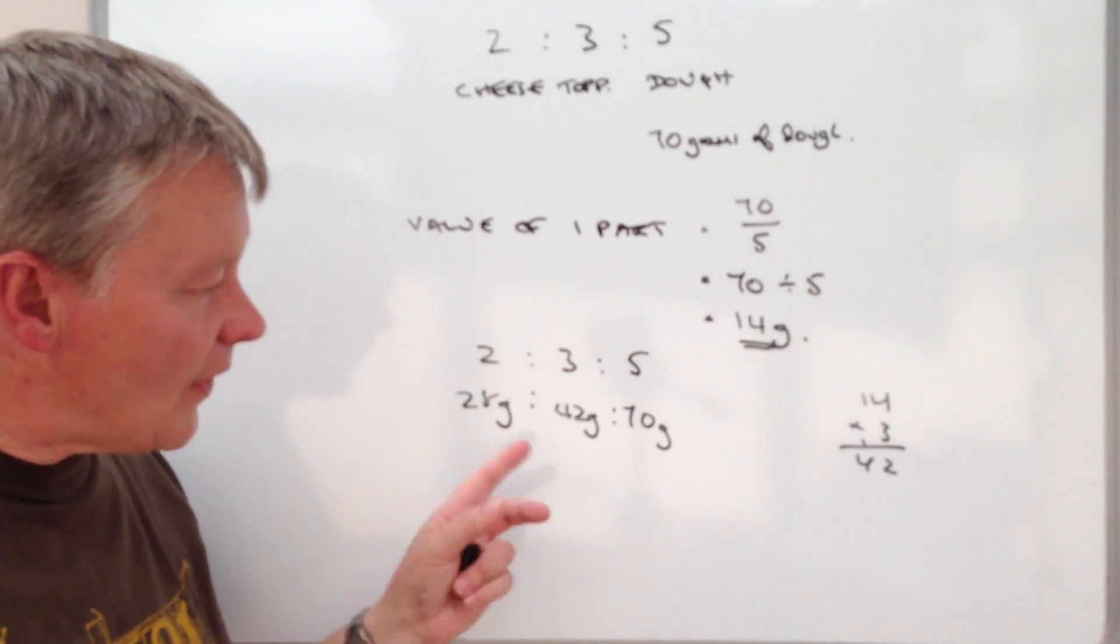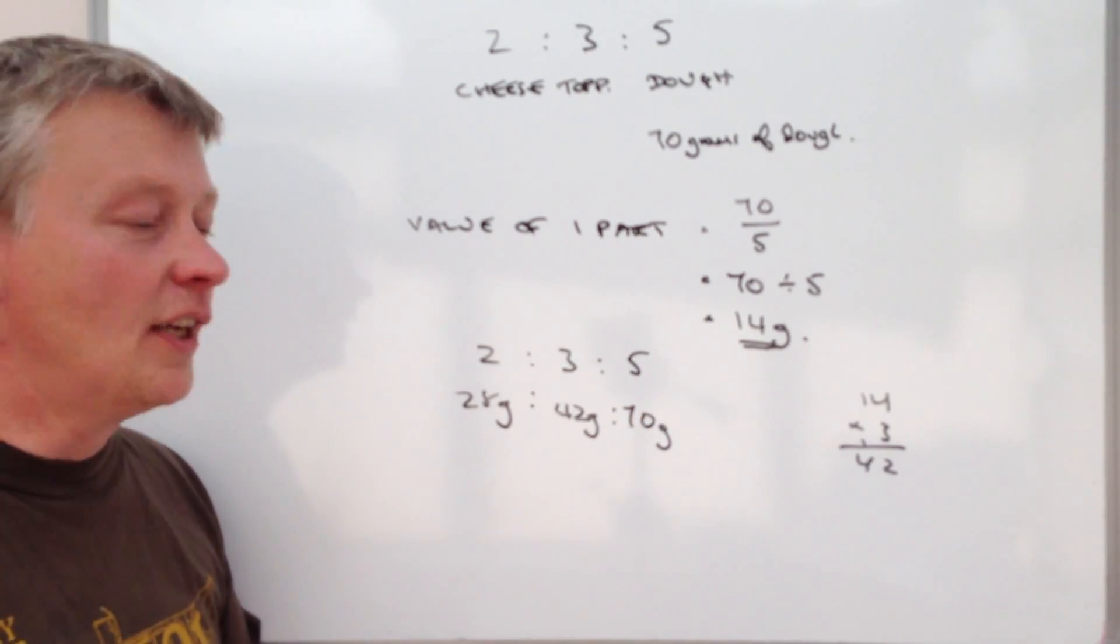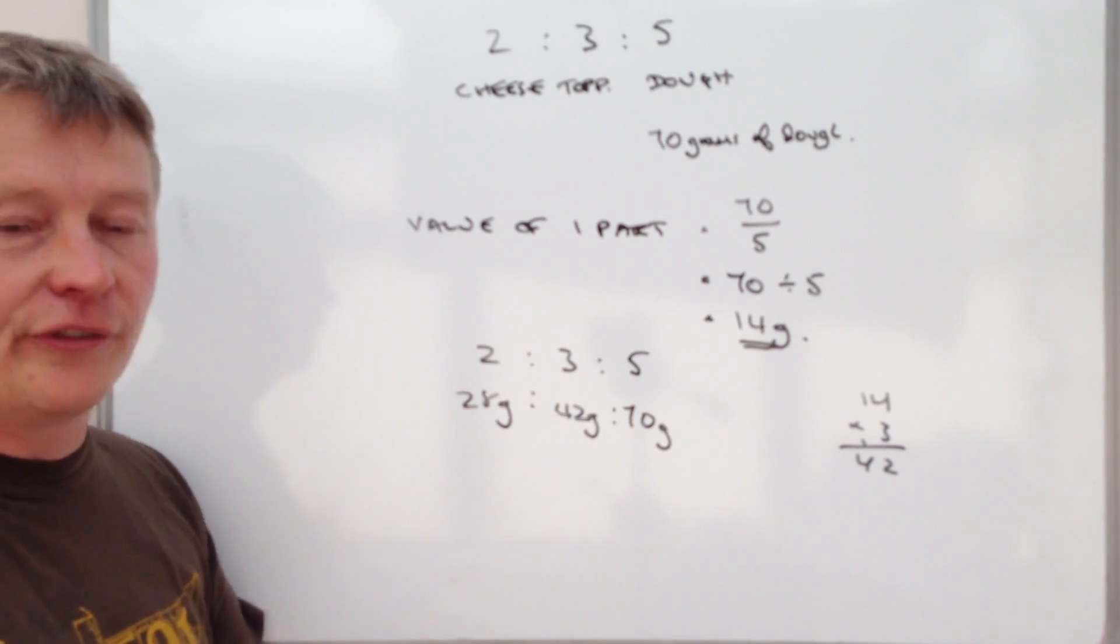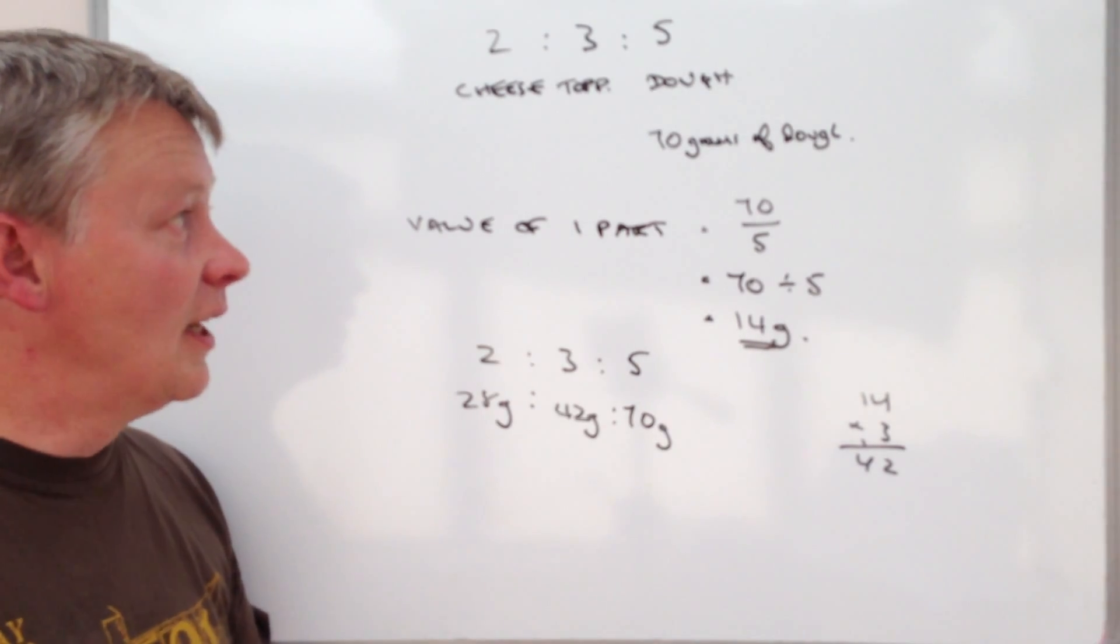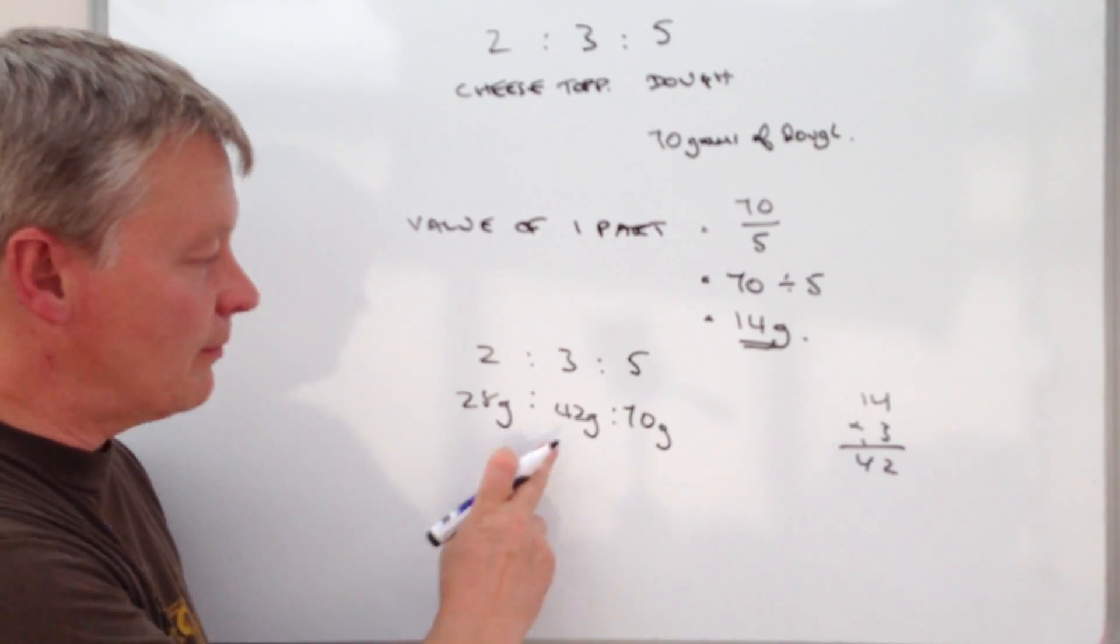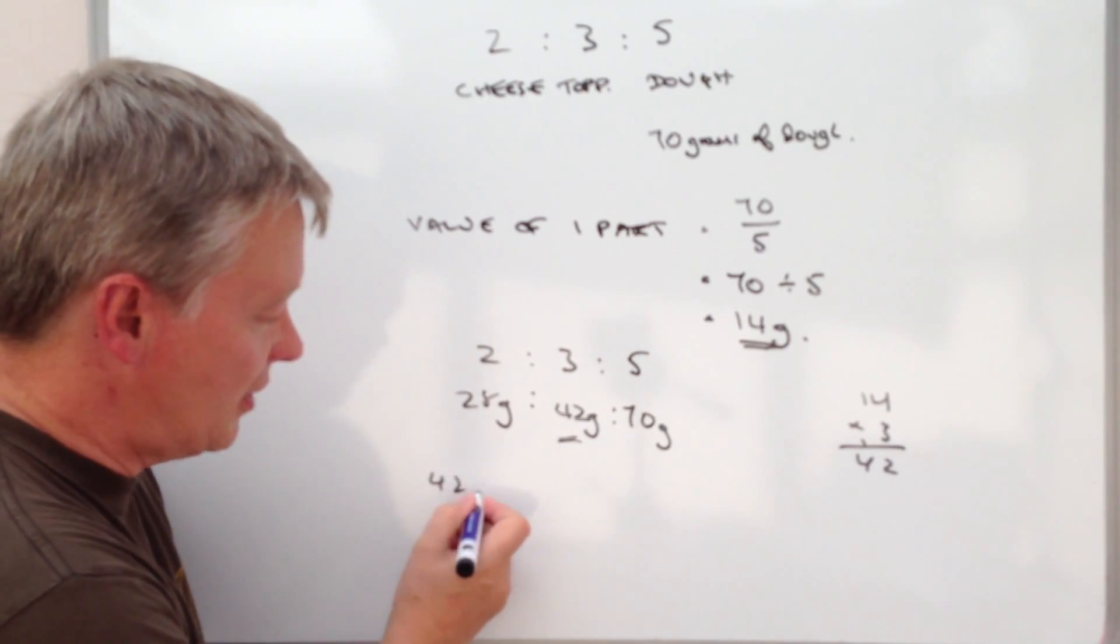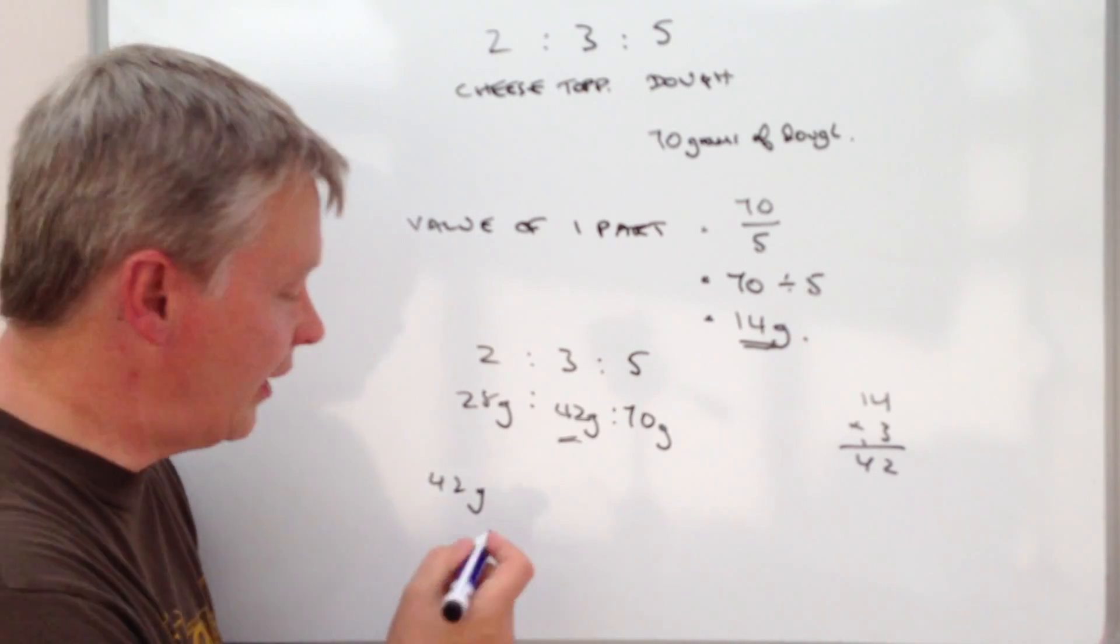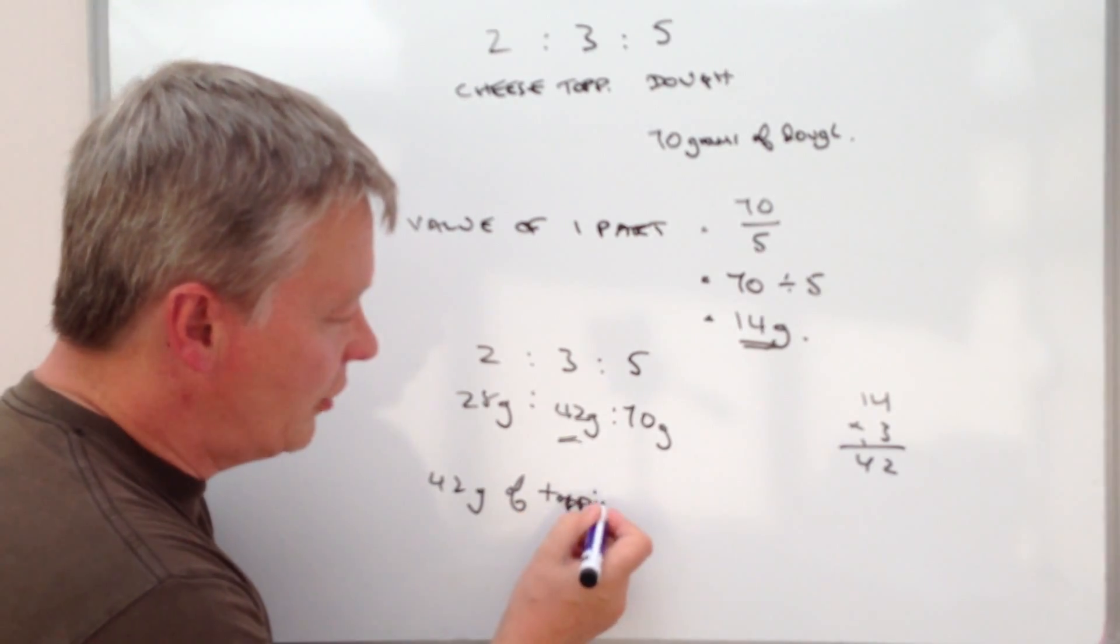So really, as I mentioned in the previous video, providing you work out the value of one part, then it should be fairly straightforward to answer a question like this. Now this particular question asked how many grams of topping. Well, the answer is going to be 42. So to answer the question, you need to write 42 grams of topping.